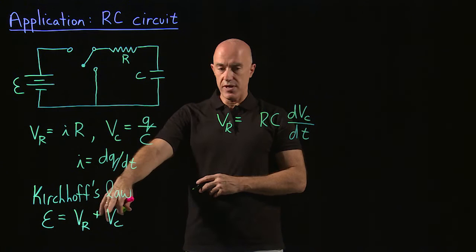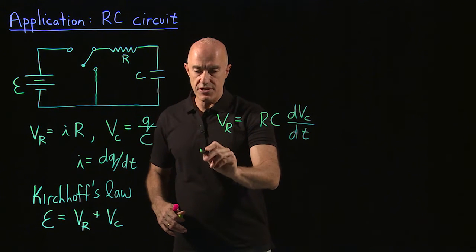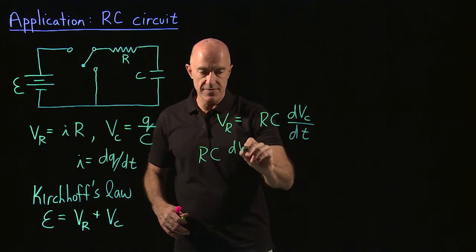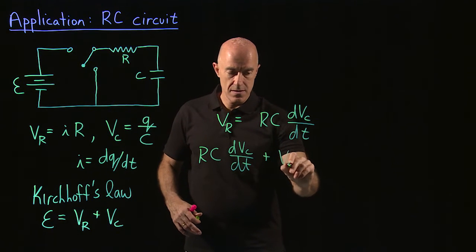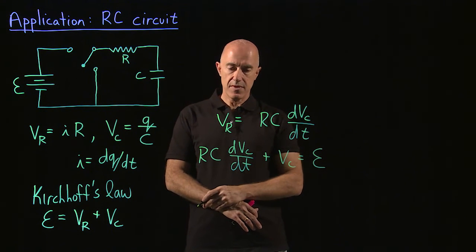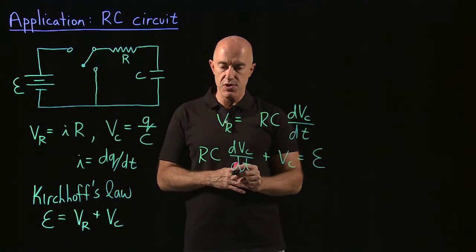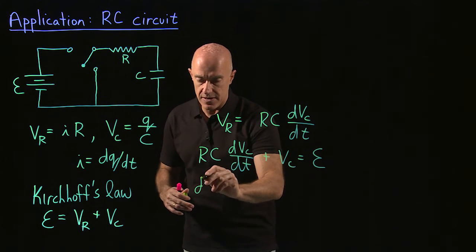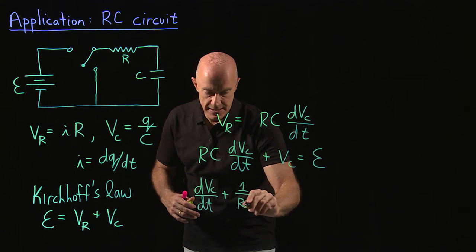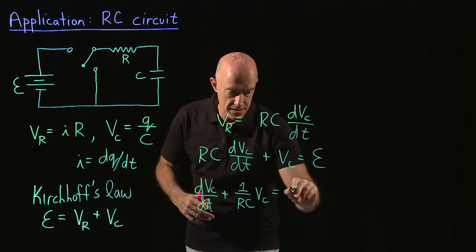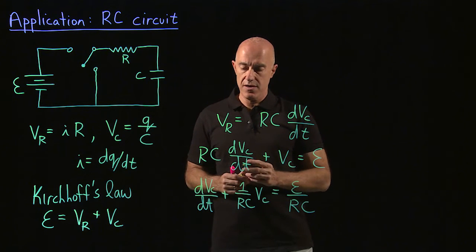Putting that together, we have the differential equation: RC·DVC/DT plus VC equals E. We notice that this is a first-order linear differential equation, so we can put it in standard form: DVC/DT + (1/RC)·VC = E/RC. That is the standard form for a linear first-order equation.